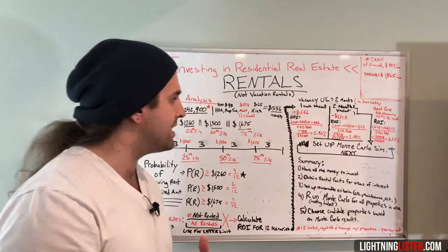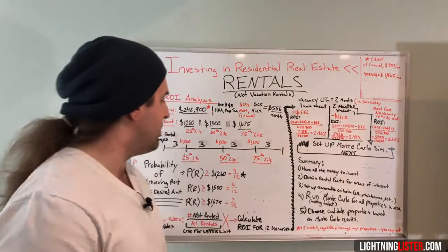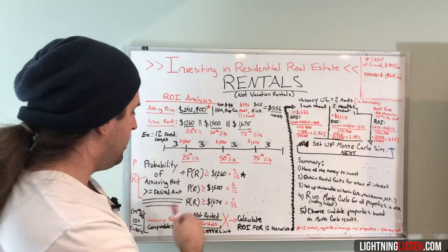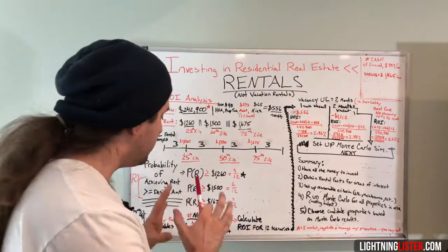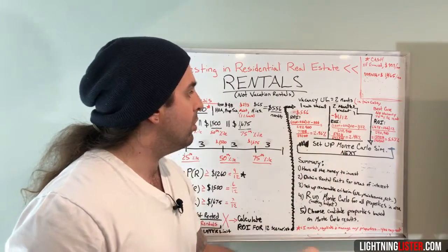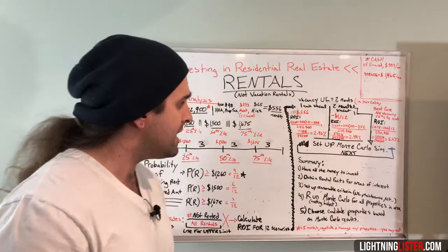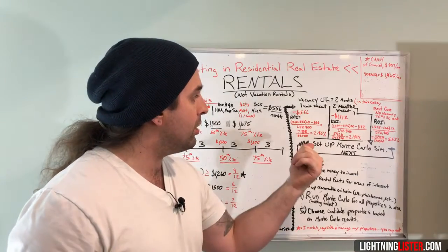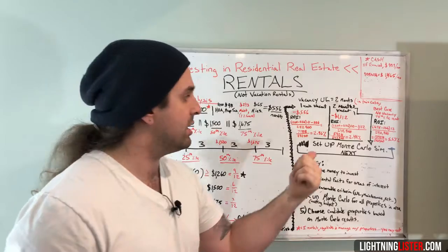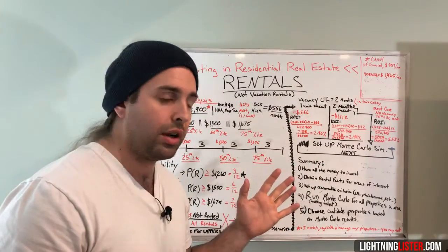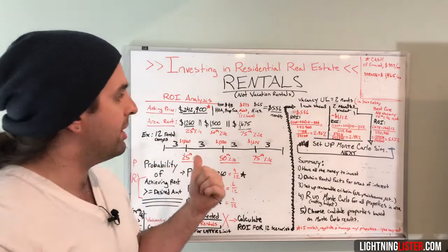This comes out to 2.96% ROI for this property — that's the lower bound, being very conservative. With two months vacancy, which is what our 75th percentile showed according to the data, we're at a 2.44% ROI. That's still not bad — you're making a little short of $500 a month with this property.